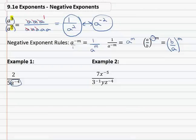This means the a needs to move to the opposite place. We end up with 2a to the 4th over the 5, which stays where it is. Only moving the parts with negative exponents.